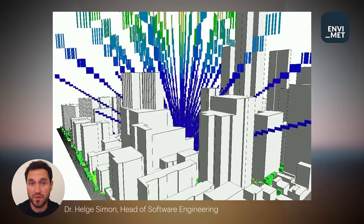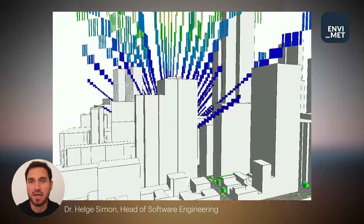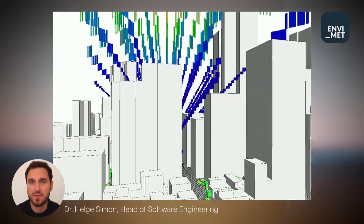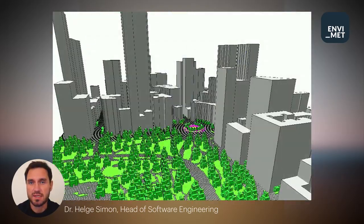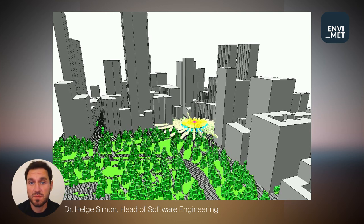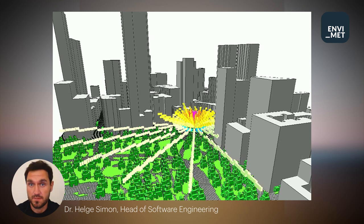With the new IVS, every cell in the model area analyzes its field of view and stores the cells that are visually connected to itself. That way, it is now possible to accurately simulate secondary radiation with little to no additional computational cost.